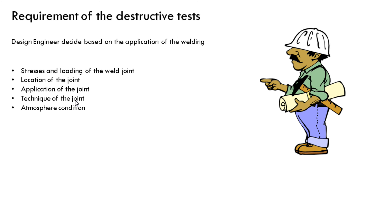After that, atmospheric condition: when you weld on the actual joint, what will be the atmospheric condition throughout the service life of the joint. That is also a consideration for performing the destructive examination. And finally, the life of the welding — how long the weld joint is required to survive under various types of loads and repeating loads, and whether the weld design is adequate enough to survive that design life. That is also decided by destructive examinations.